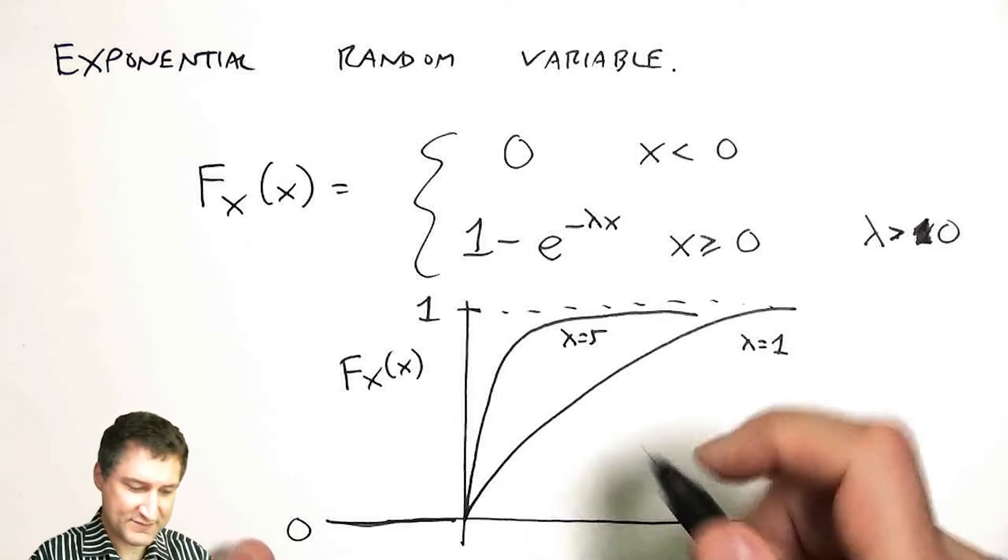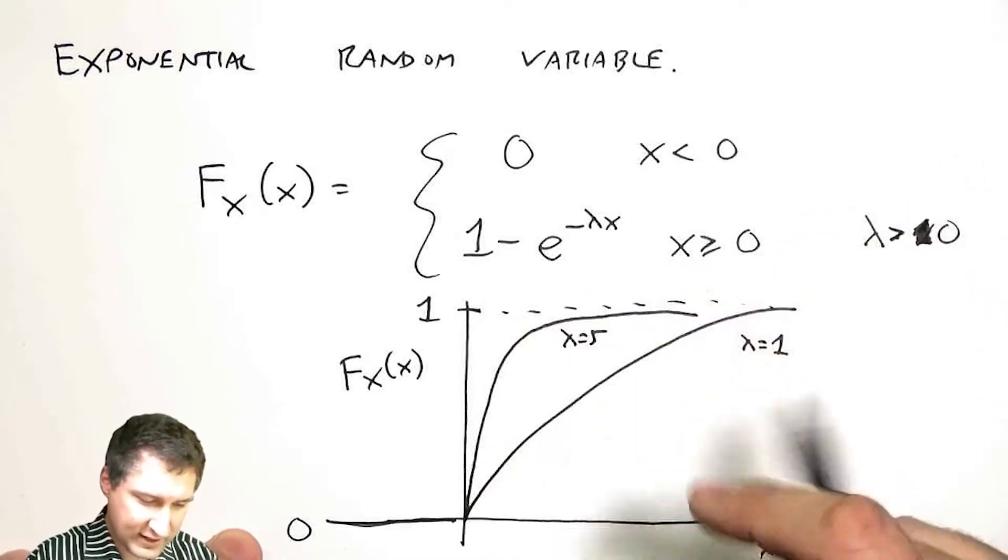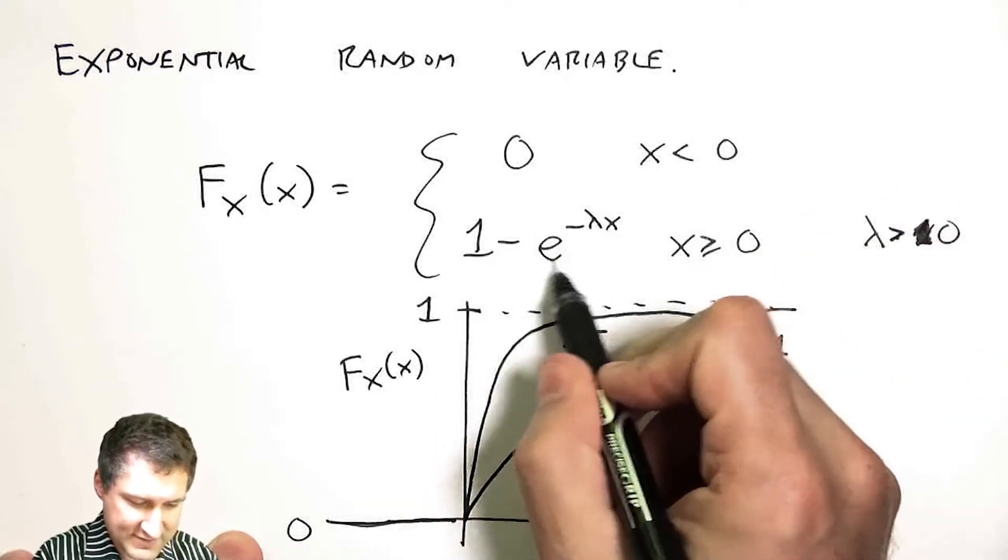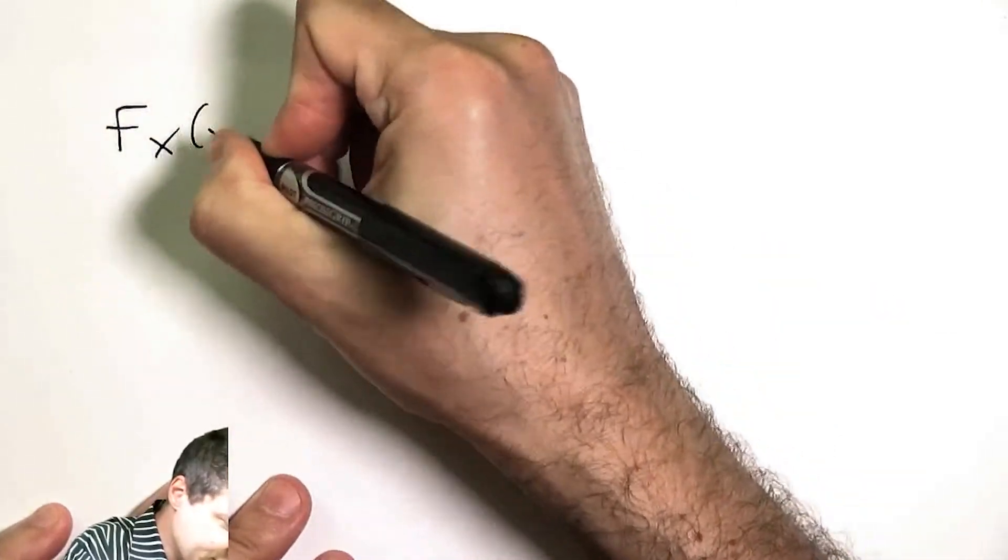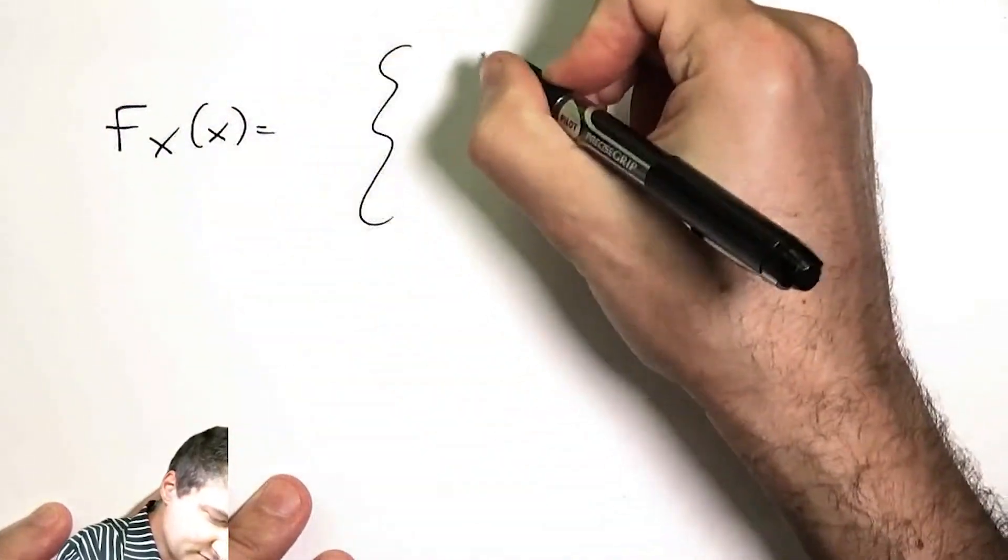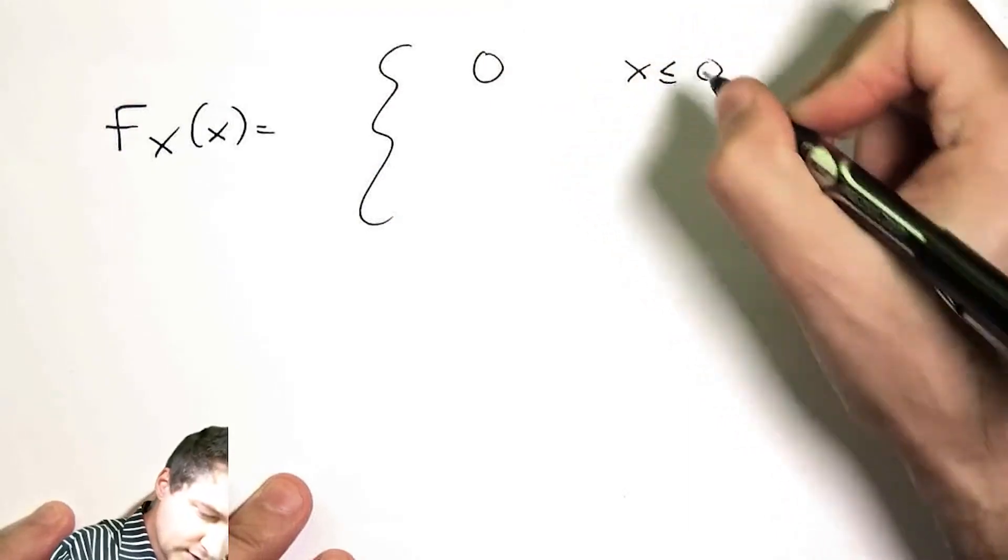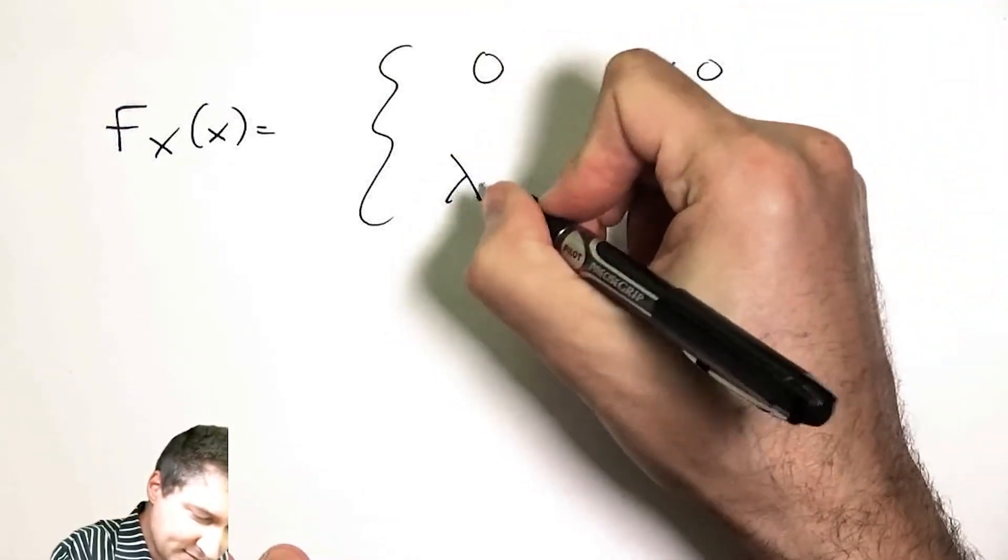I should take the derivative of the CDF. Clearly it's going to be zero out here, and then I'm going to have to take the derivative of this part. So the PDF is the derivative of the CDF, it's equal to zero, and then I have lambda e to the minus lambda x when x is greater than zero.